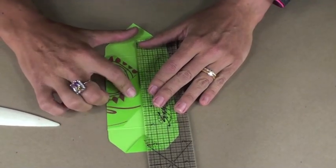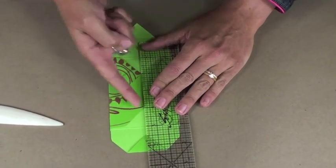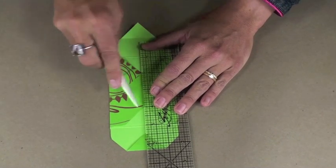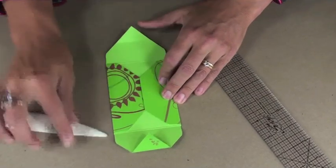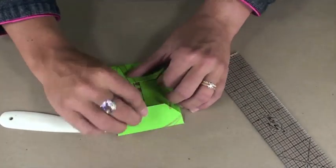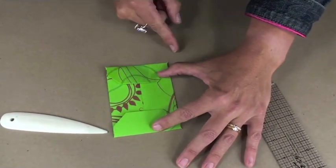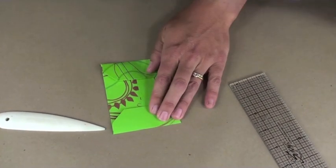Place your grid ruler along the apex of that V and then score along that intersection with your bone folder and tuck in that remaining little pointy flap. Now when I close the envelope, it does actually look like a traditional coin envelope style.